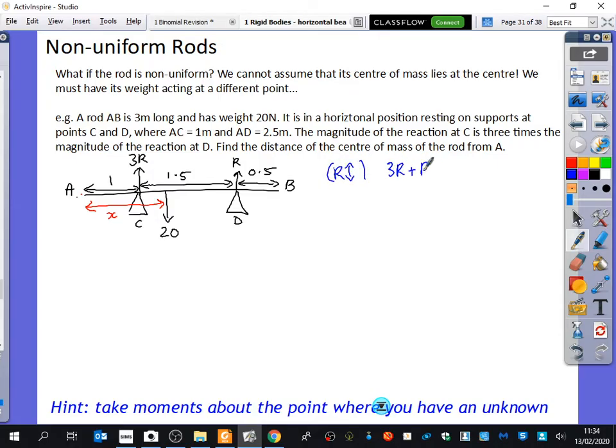So we get 3R plus R equals 20. So 4R is 20. R equals 5.